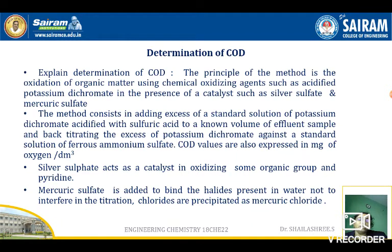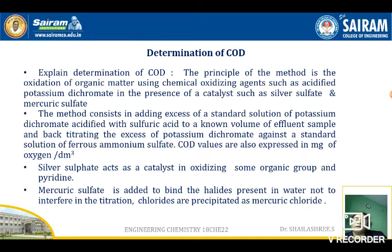Now, determination of COD in laboratories. The principle of this method is the oxidation of organic and inorganic matter using a chemical oxidizing agent like acidified potassium dichromate in the presence of catalysts — silver sulfate and mercuric sulfate. The method consists of adding an excess of potassium dichromate acidified with sulfuric acid to a known volume of the sample, and back titrating the excess potassium dichromate.